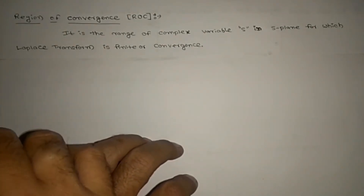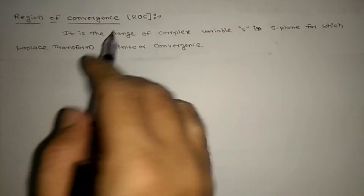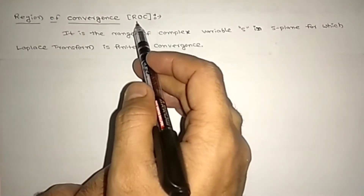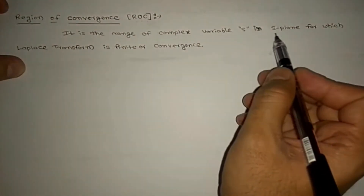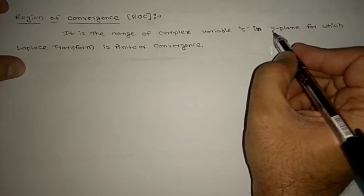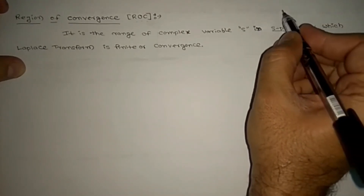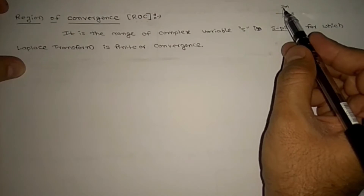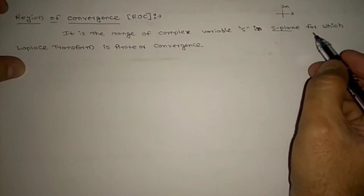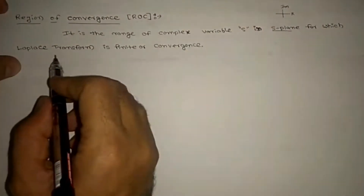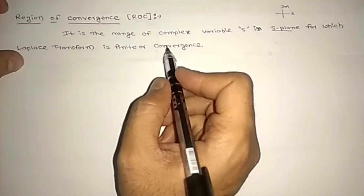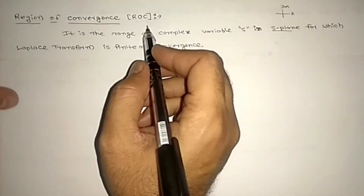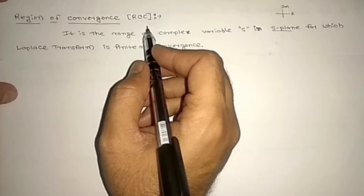Let us see the next topic: Region of Convergence, shortly called ROC. It is the range of the complex variable s in the s-plane, where the s-plane has a real axis and imaginary axis. ROC is the region for which the Laplace transform is finite or convergent. Wherever the ROC exists, the Laplace transform exists; otherwise it will not exist.